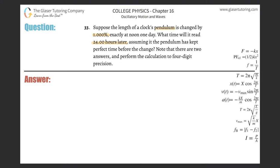So basically, what I want to do is find the relationship between the old time and the new time. What I want to do is create a ratio out of this formula. The period of the pendulum is equal to 2π multiplied by the square root of the length of the pendulum's arm divided by the gravitational acceleration. So what I want to do here is basically create a ratio using this formula.